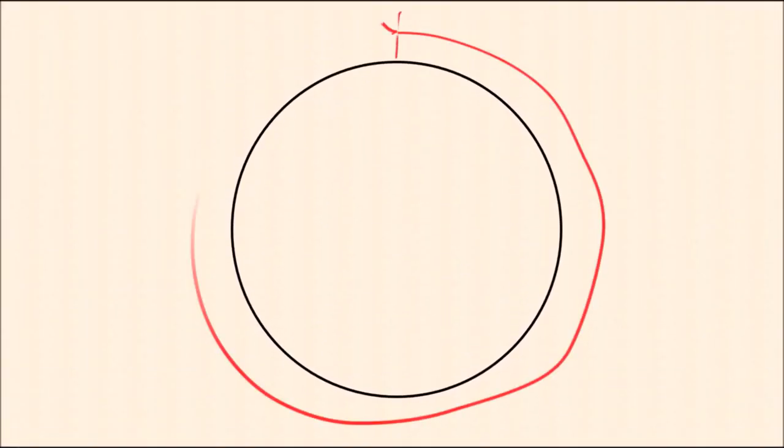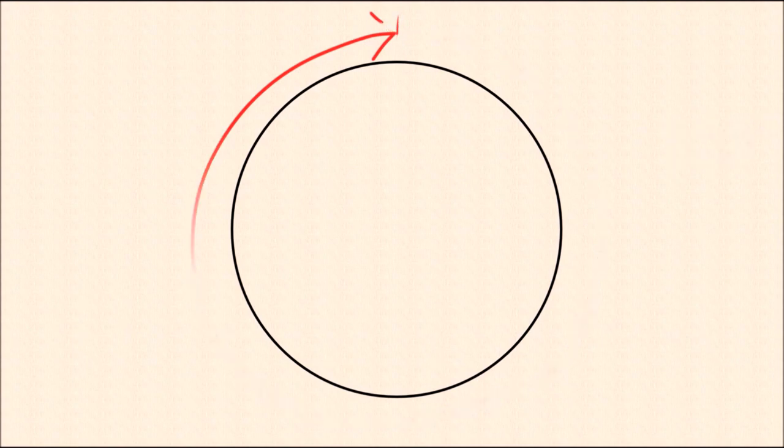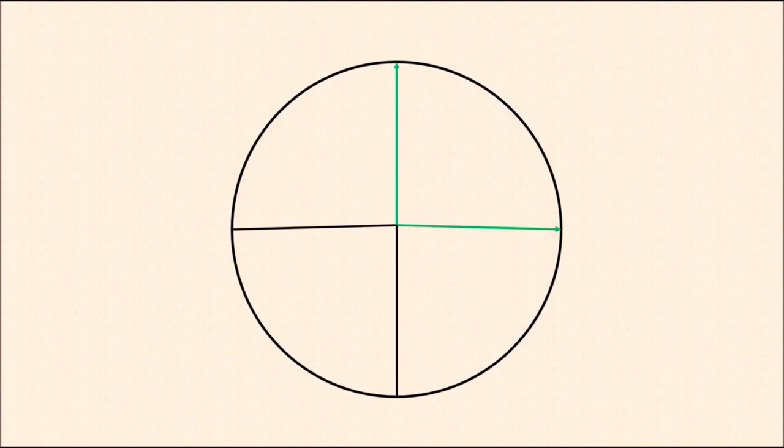Looking at circles, students around the fifth grade begin to understand that circles contain an angle measure of 360 degrees. Now they can use this understanding of angle measurements as far as fractions of a circle.